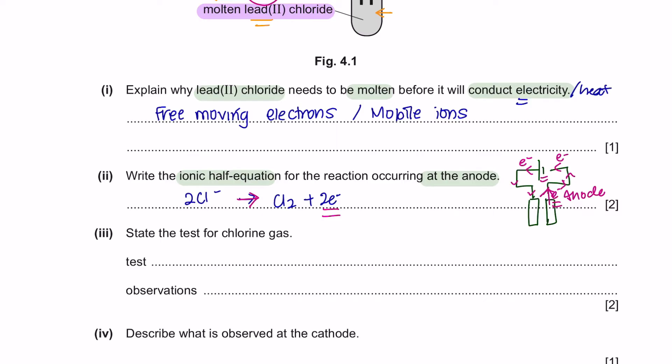Next, part 3. State the test for chlorine gas. To test chlorine gas, we will use a damp litmus paper. Since chlorine is acidic, it will bleach the litmus paper. If you are asked for observation, chlorine gas is a greenish-yellow gas. Therefore, what you will observe is greenish-yellow bubbles. Don't mention your observation as chlorine gas because you cannot see a gas. What you can see is greenish-yellow bubbles, meaning that it is chlorine gas.